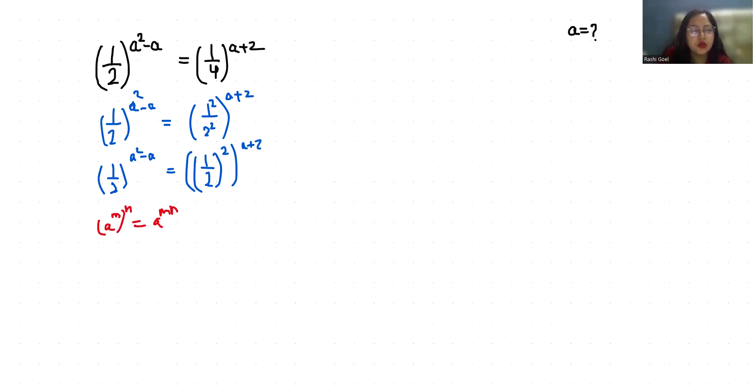So (1/2)^(a²-a) = (1/2)^(2a+4). Now if we compare both sides, the base are equal, their power are also equal. So a²-a = 2a+4.